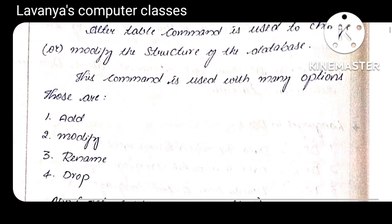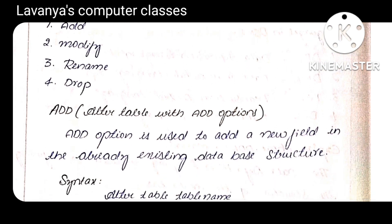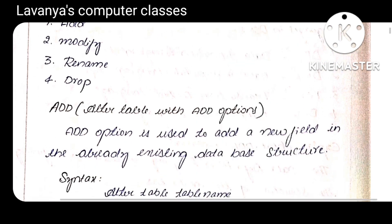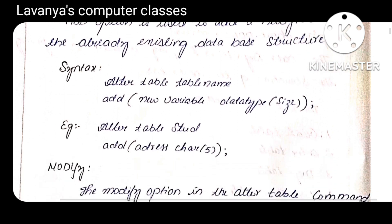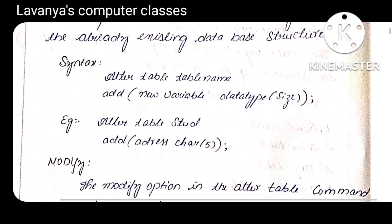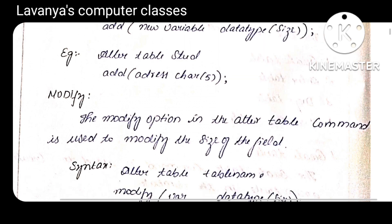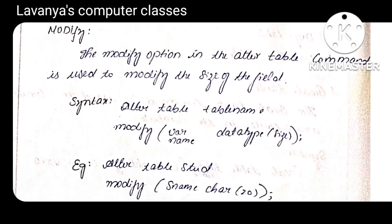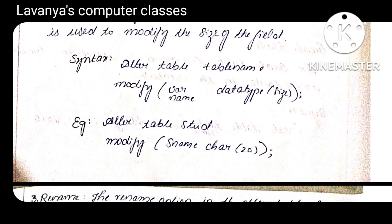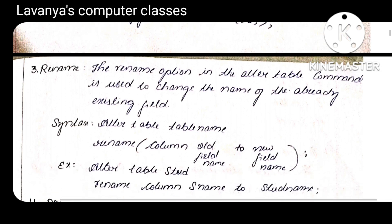The second one is ALTER TABLE. ALTER TABLE is used for altering the structure of a table. The options are ADD, MODIFY, RENAME, DROP. ADD is used for adding a new column in an already existing table. Syntax: ALTER TABLE table_name ADD new_column datatype(size). In the previous example, I added one column. MODIFY is used to change the size of the data type.